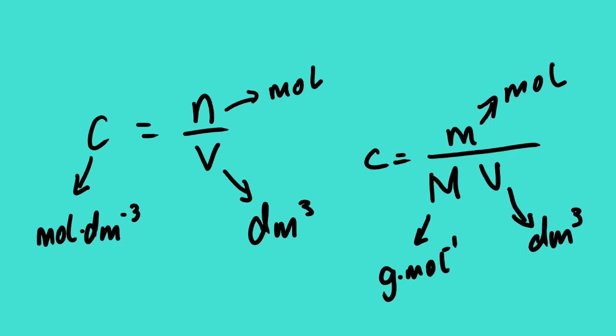In this lesson video we are going to focus on these two equations. Now C is equal to n over V. So far from lesson 101 we were focusing on n, the number of moles, measured in moles. In this lesson video we are going to look at concentration or molarity.